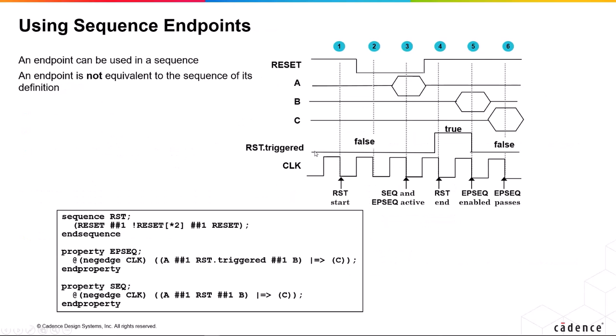Here's an example showing just to show you the difference between an endpoint and the sequence itself. This is the sequence here: reset, followed by not reset consecutive for two cycles, followed by reset again. And we've got two properties here.